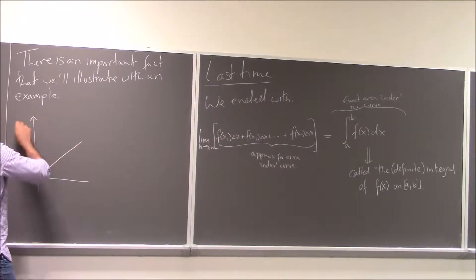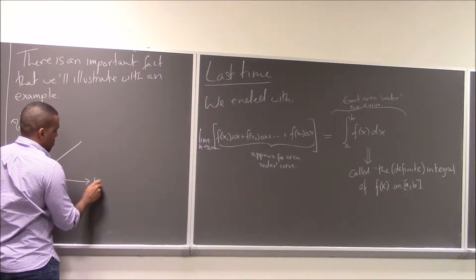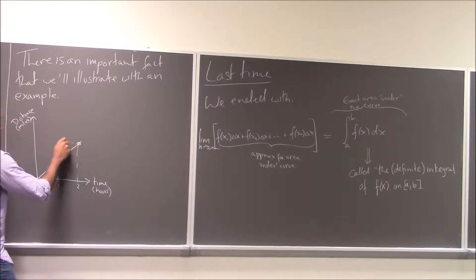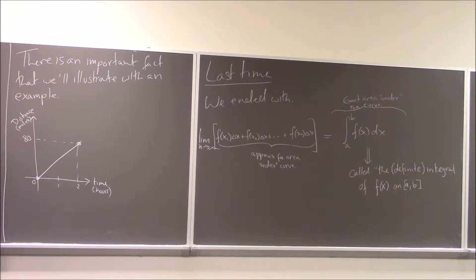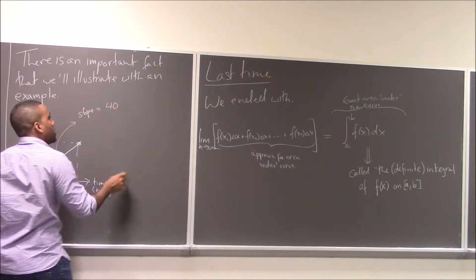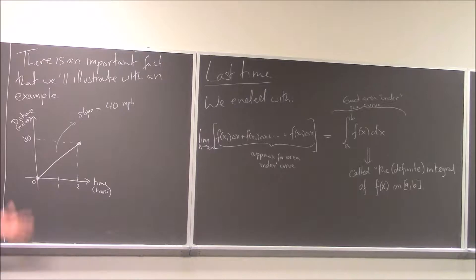You might remember this: we were talking about the distance traveled by some object, measured in miles, over time measured in hours. We had 1 and 2 hours, and after two hours it traveled 80 miles. We found the slope of this line, which was 40 miles per hour, and interpreted that as speed. From that, we talked about using the slope of a straight line to refer to velocity, and that started the whole derivatives thing.